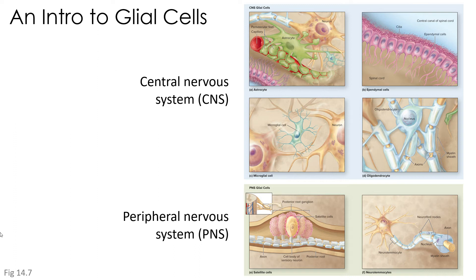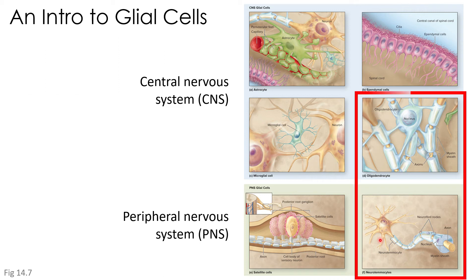So, a quick recap: the central nervous system contains astrocytes, ependymal cells, microglial cells, and oligodendrocytes. And the peripheral nervous system contains satellite cells and neurolemocytes. We're going to cover the majority of these in a future module, but today we're going to be introducing oligodendrocytes and neurolemocytes and the role they have in the production of the myelin sheath.